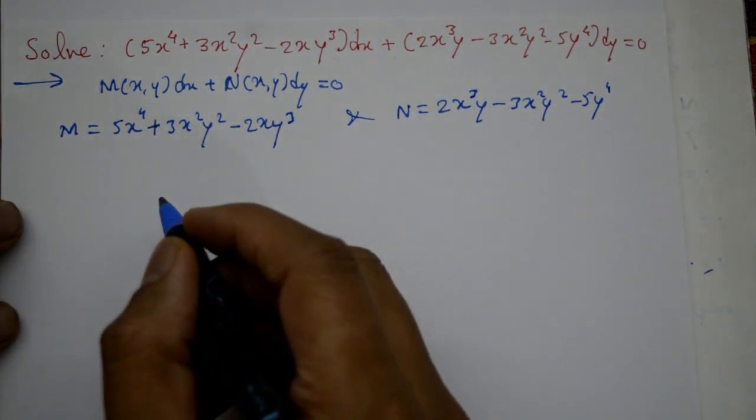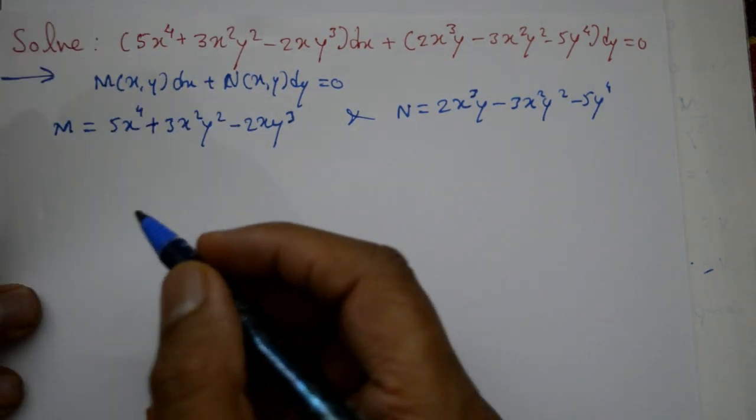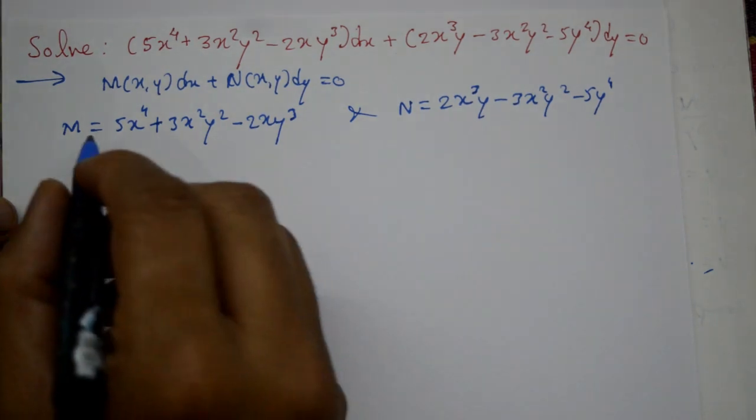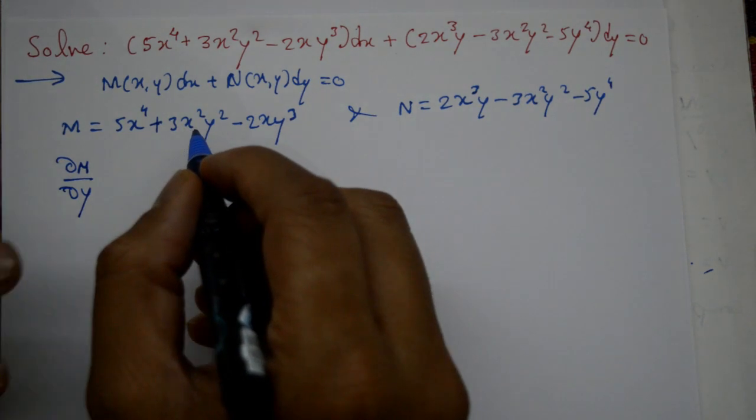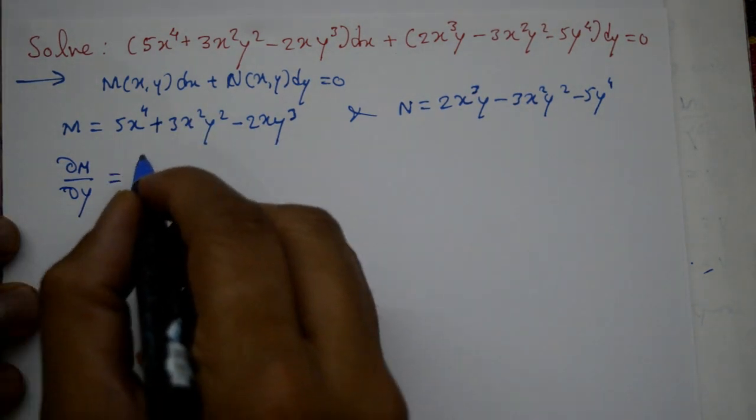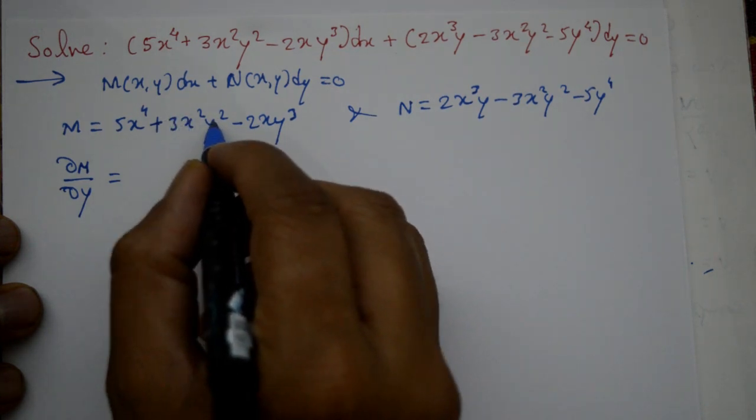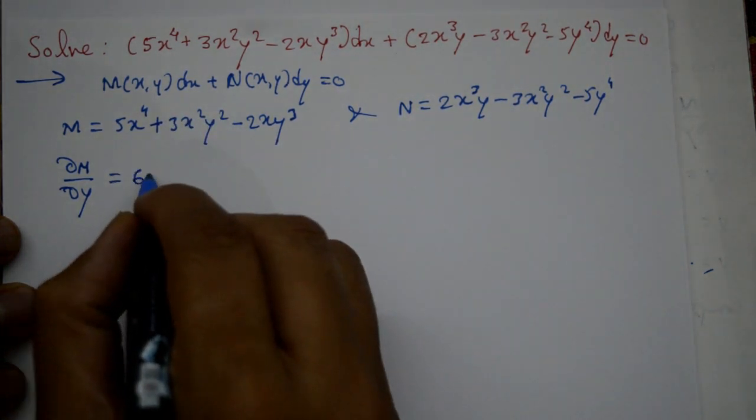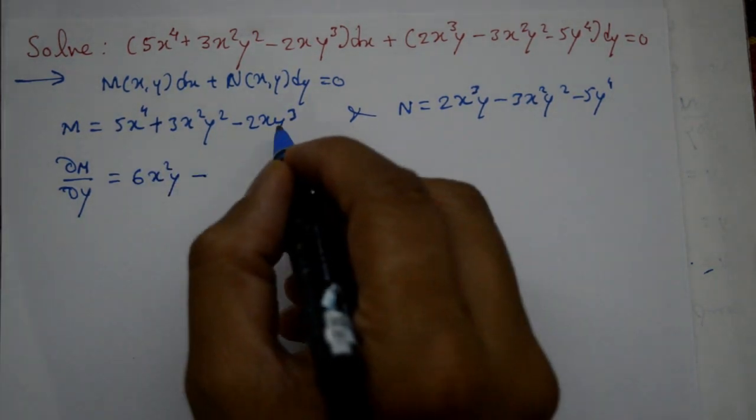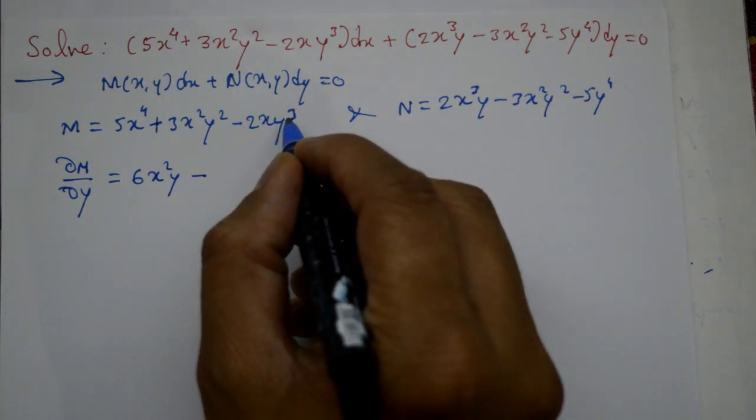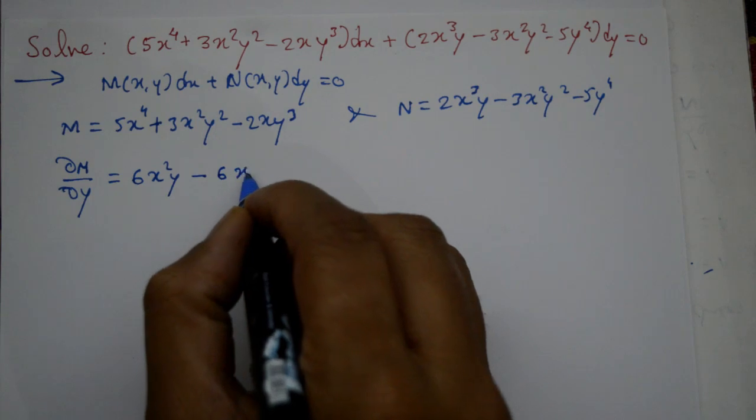Now differentiate M with respect to y partially, treating x as a constant. This is equal to: x constant so 0, differentiate 3x^2 with y^2 to get 2y, so 6x^2y. Then minus, differentiate y^3 to get 3y^2 times 2x, so 6xy^2.